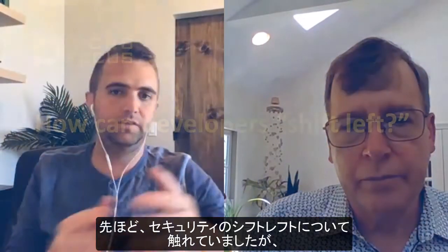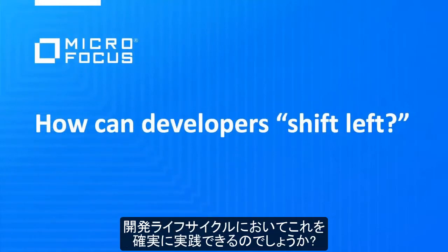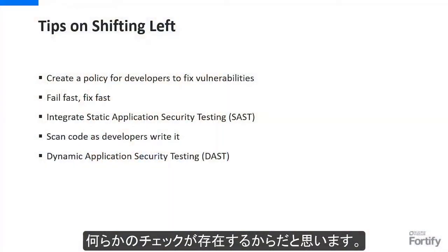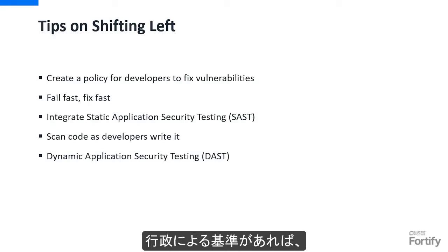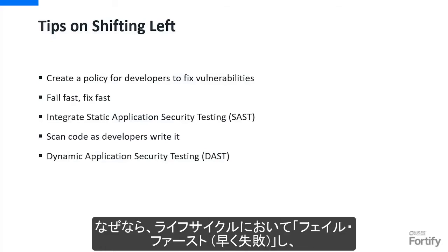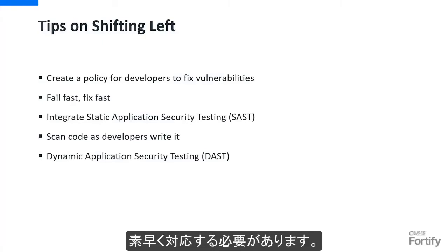So what are some ways that developers can make sure they're actually shifting security left in the development lifecycle? Developers will fix security weaknesses in their applications either because they feel accountable for security outcomes or because there's some kind of check along the way to production around security. If dev teams have a mandate or there's a government standard or policy that they fix security vulnerabilities like other high or critical defects, high-performing teams will naturally start shifting their security testing to the left over time, because they understand they need to fail fast and find flaws as early as possible.